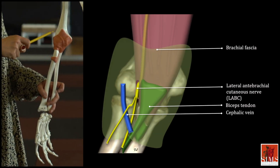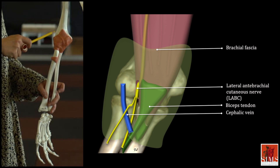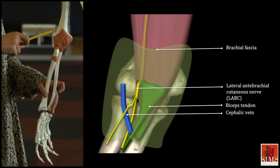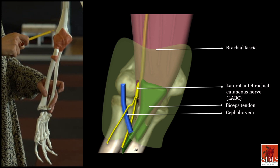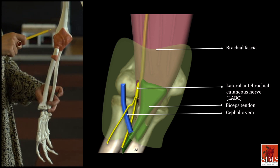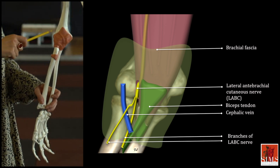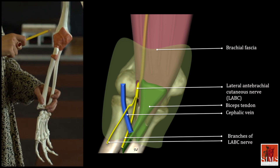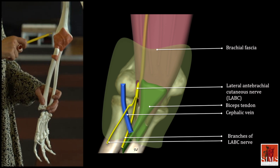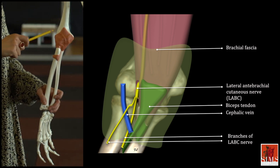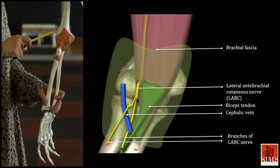After this point, it is called the lateral antebrachial cutaneous nerve and splits into two branches, one anterior and one dorsal, which provides sensory innervation of the lateral part of the forearm.